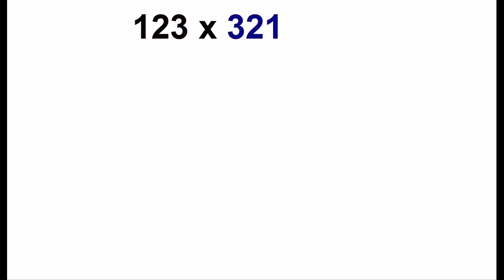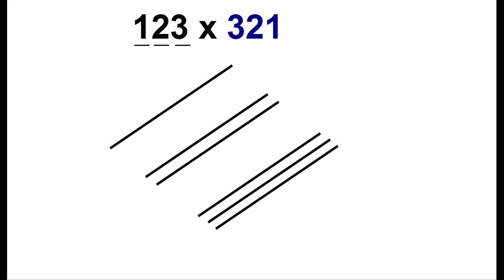We can even do this for bigger numbers. 123, we start out with one line, then with some space two lines, with some more space three lines. And we draw the other lines for the other number in the other direction.